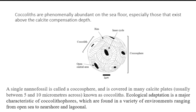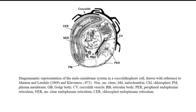Untuk cell inside-nya adalah seperti ini: dia memiliki membran, ada nukleus, kemudian ada kloropas-nya, kemudian ada flagelanya, retikular, dan juga ada endoplasmatik-nya. Jadi ini adalah isi daripada body part tersebut. Apabila kita detailkan, kurang lebih seperti ini gambaran untuk morfologinya secara umum.